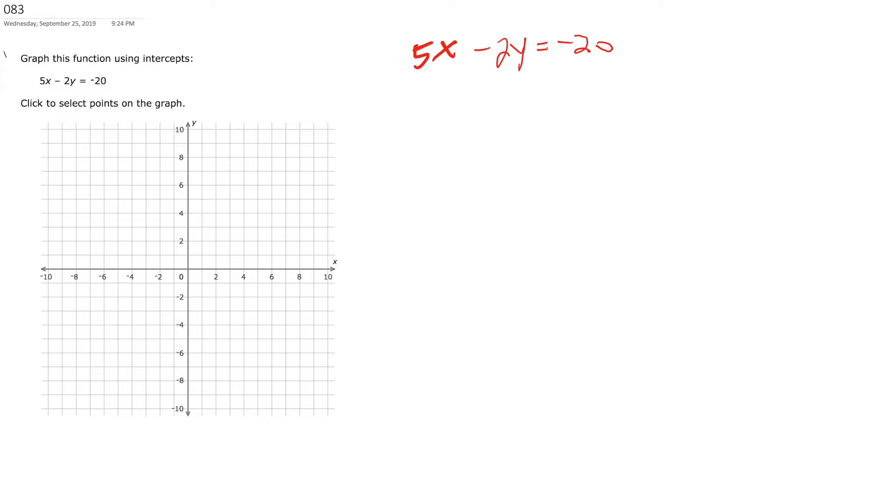Okay, so this lesson says to graph using intercepts, how would you do that? Yes, so the way I remember it is to find the x-intercept, you plug in 0 for the opposite letter. To find the x-intercept, you plug in 0 for y. To find the y-intercept, you plug in 0 for x. Okay, so we'll do that. So x, y, so we're going to find, let's do the y. So to find the y-intercept, what would we do again?